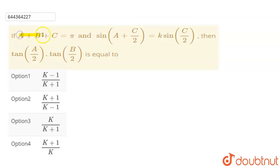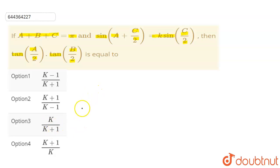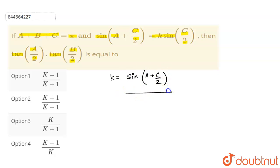So this is the question. If a plus b plus c is equal to pi, and sine of (a+c)/2 is equal to k times sine of c/2, then tan(a/2) times tan(b/2) equals — option 1: (k-1)/(k+1), option 2: (k+1)/(k-1), option 3: k/(k+1), and option 4: (k+1)/k. So k would be equal to sine(a+c)/2 upon sine(c/2).